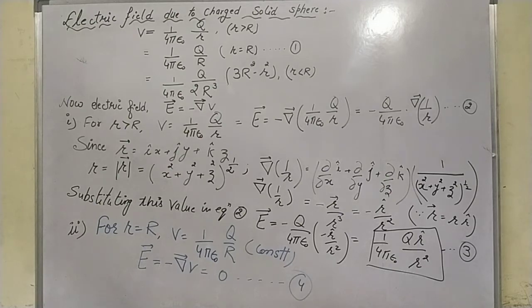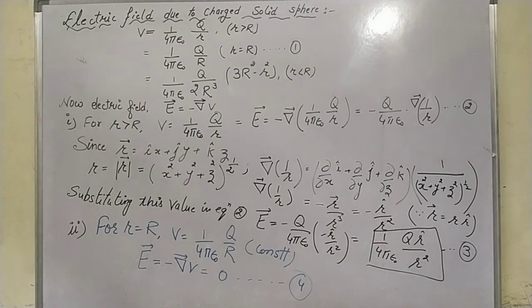In the second case, when R is equal to R, V = 1/(4πε₀) × q/R. This value is constant, so the electric field will be equal to zero.